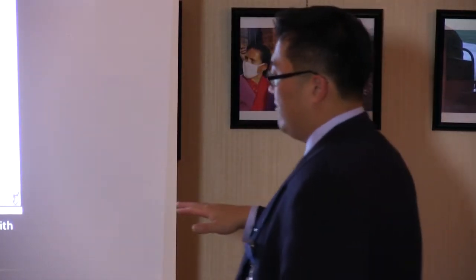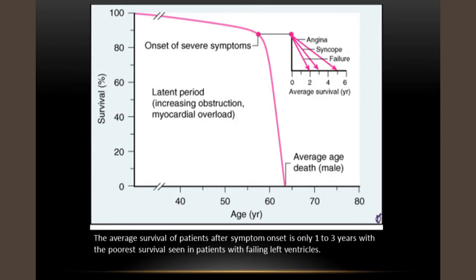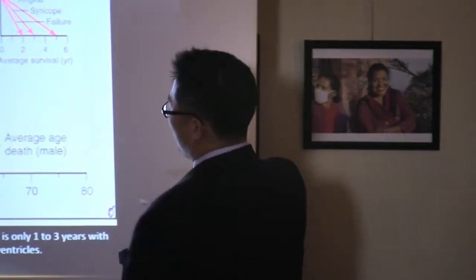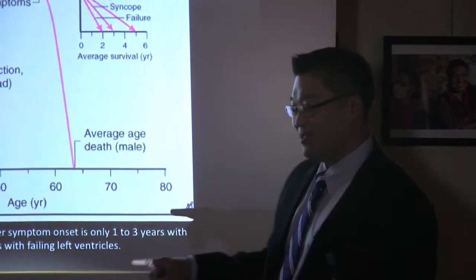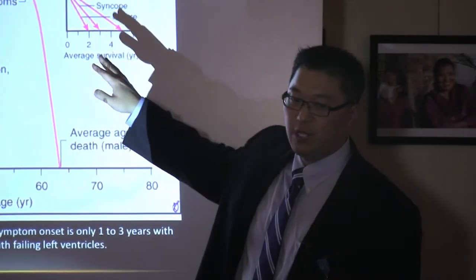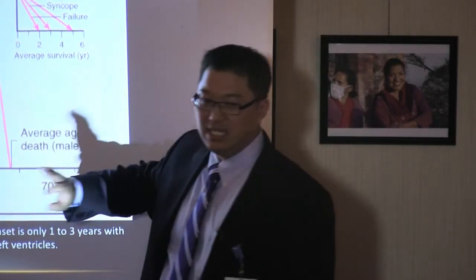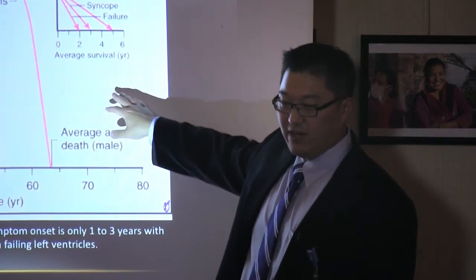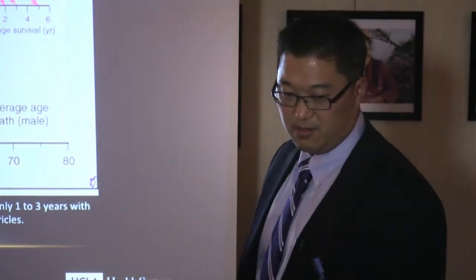Aortic stenosis doesn't occur overnight — it occurs over decades. There's a long period with no symptoms where survival is steady. But once a patient develops symptoms — whether angina, syncope, or heart failure — survival precipitously drops off. It's really important to determine if somebody with aortic stenosis has symptoms, because patients will start having mortality if we don't treat it right away. This graph was initially published in the 1960s and shows the natural history of untreated patients. Nowadays, if a patient at age 60 has symptoms and severe aortic stenosis by echo, they'll get a valve replacement, which lets them live longer.